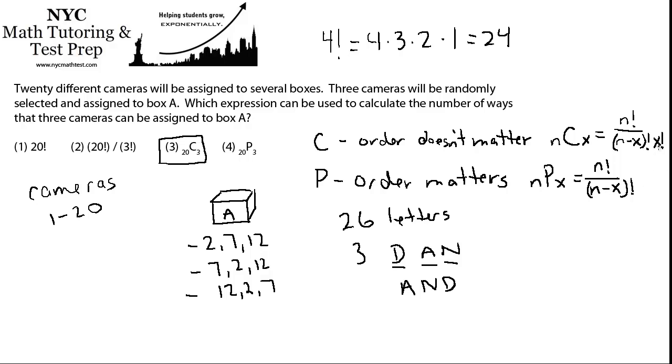And that's why this number doesn't have that extra term that it's being divided by. Clearly, if you divide by an extra term, this is going to become smaller than this. So, NPX will usually be greater than NCX. And that's a good way to remember which one is the permutation and which one is the combination.